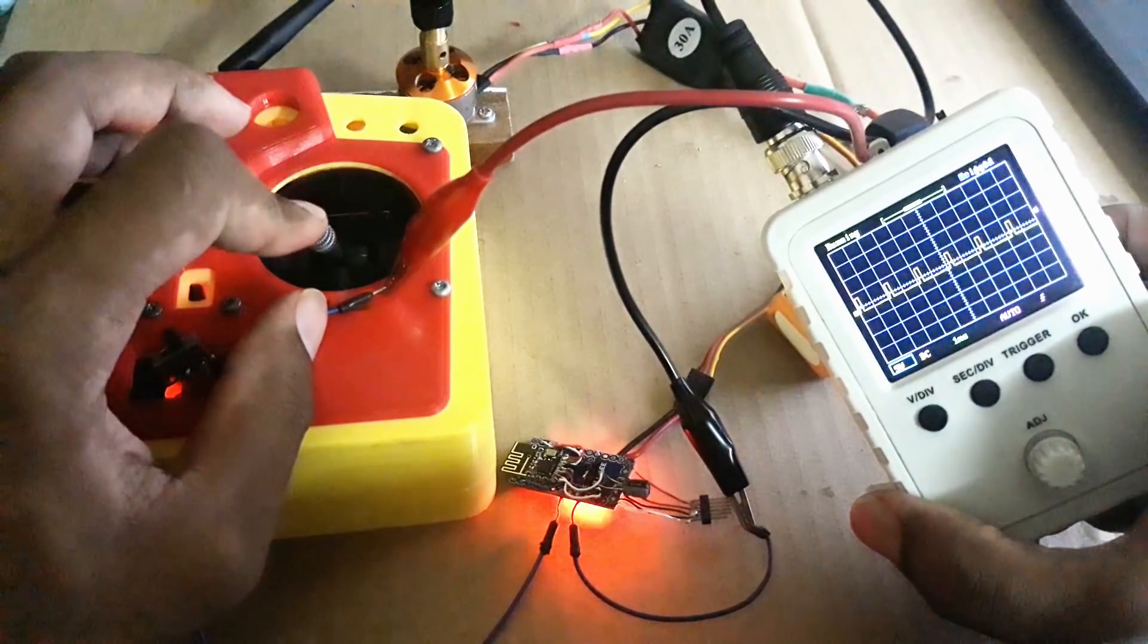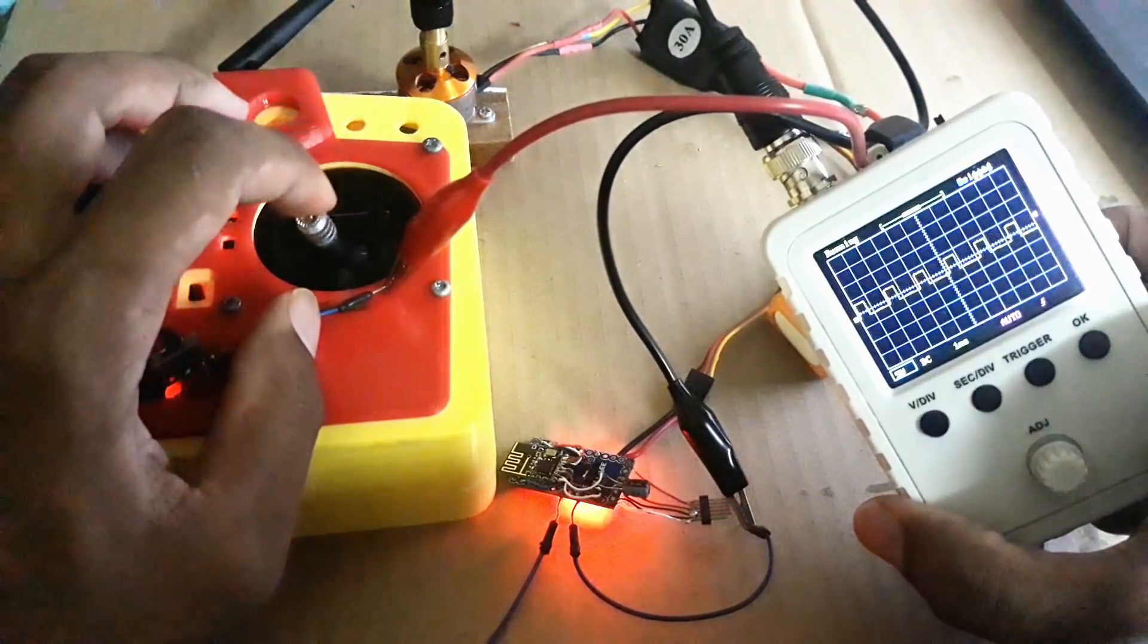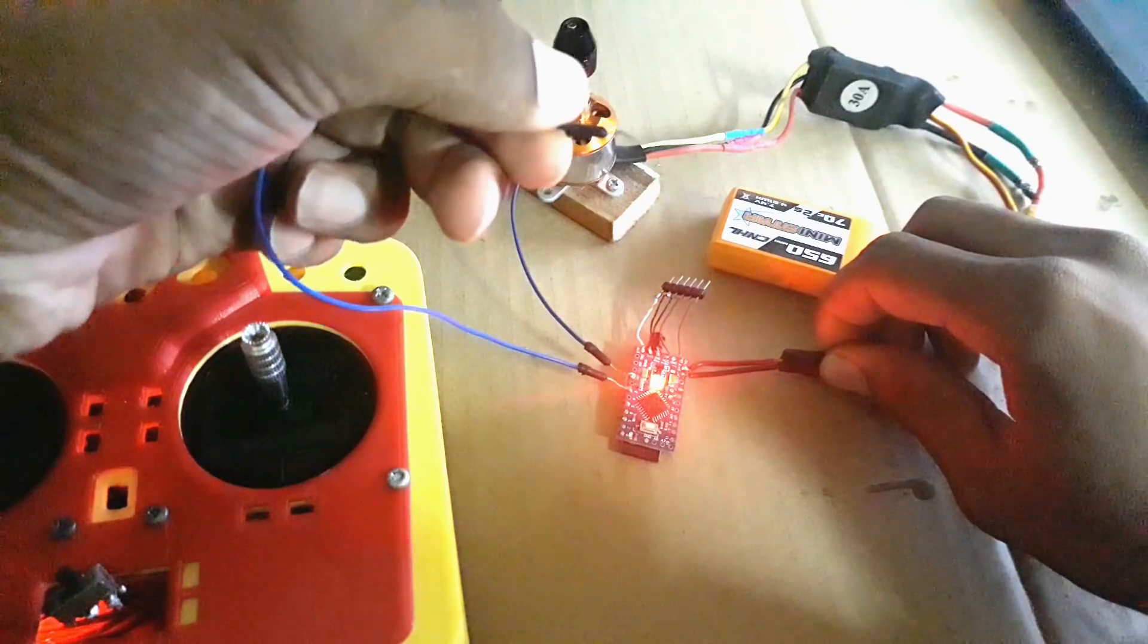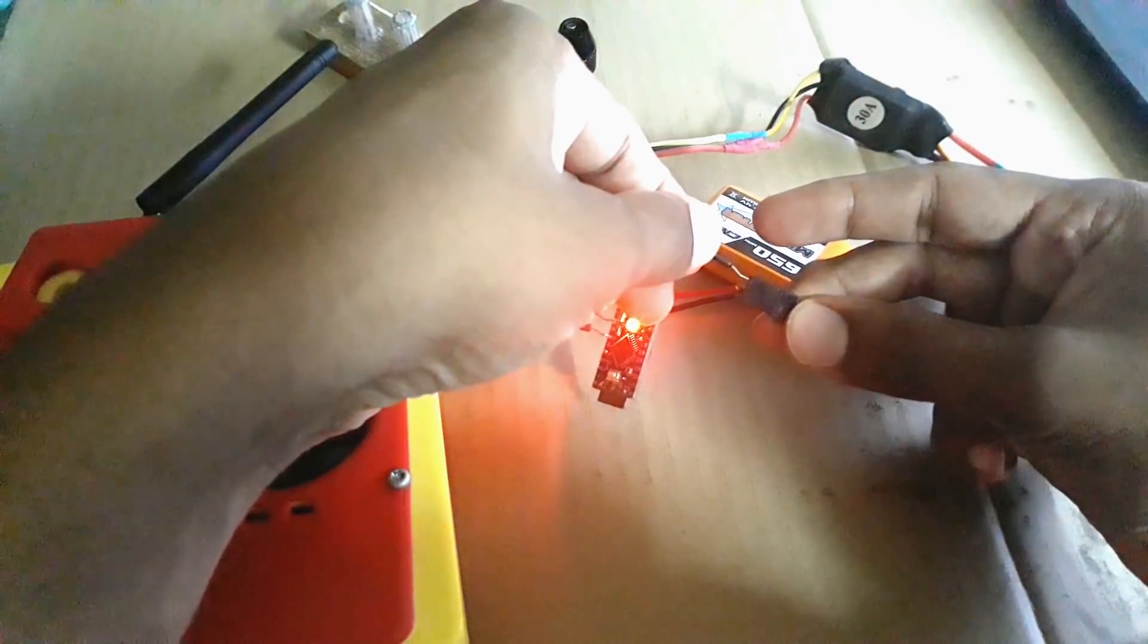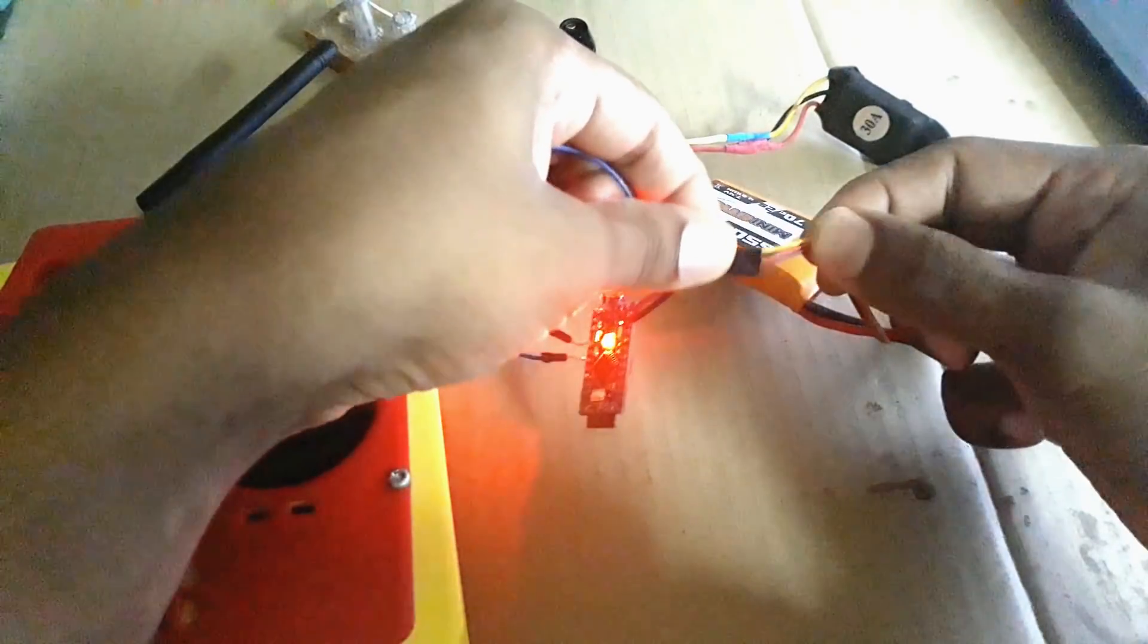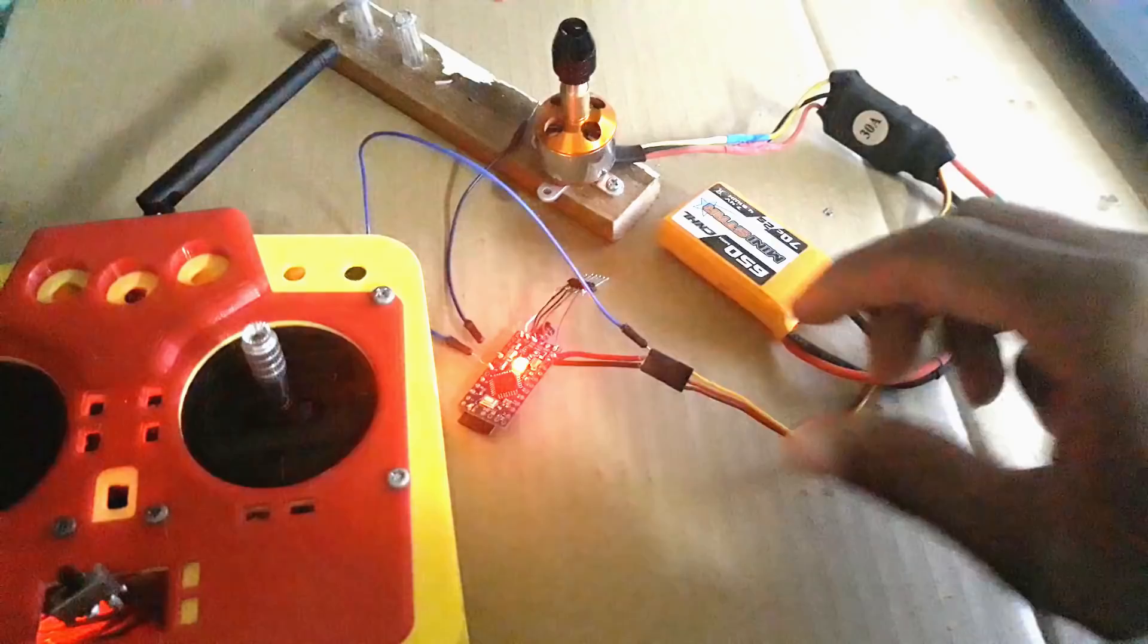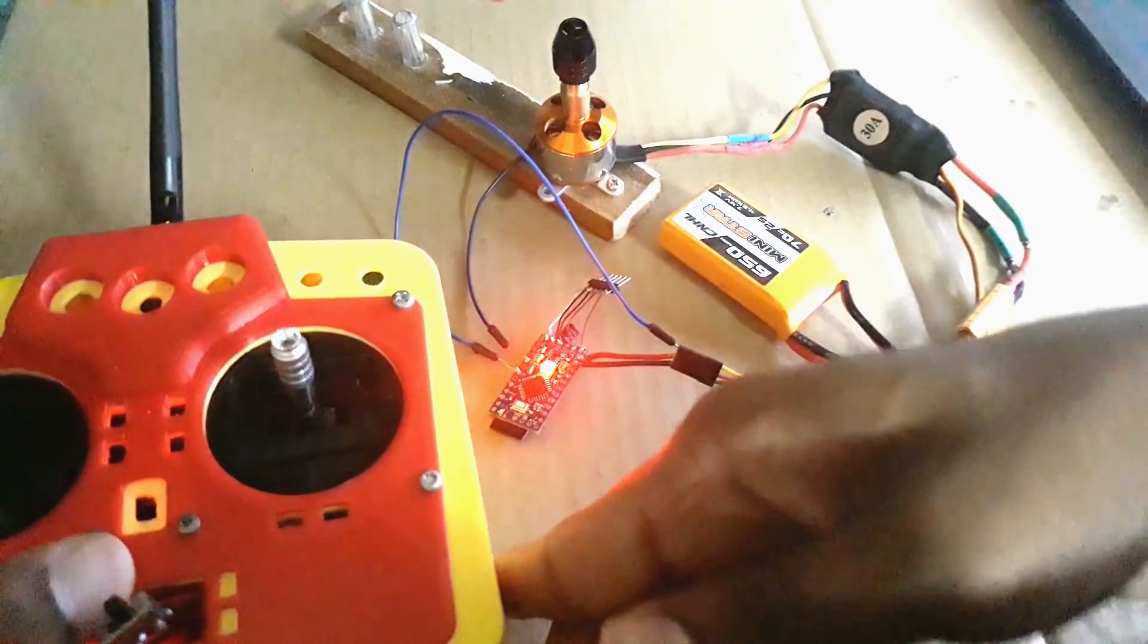I have not tested it using the other joysticks. I have added only this joystick. This is the circuit for our receiver connected to the brushless motor. Now I am going to connect the signal wire of the brushless motor to the digital pin 3 of the receiver and we will just try to work it. So let's check it now.